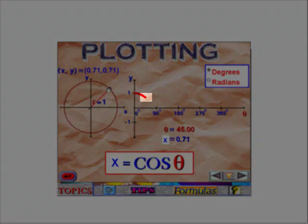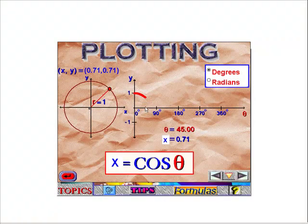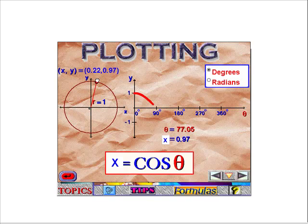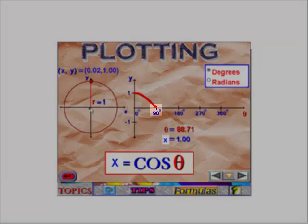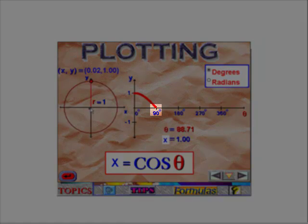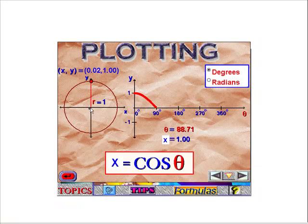So we'll go ahead and stop there and say, yes at 45 degrees it looks like we're about at 7 tenths. What happens when I go to 90 degrees? Well at 90 degrees, my x value is 0. So the cosine function crosses the x-axis at 90 degrees.